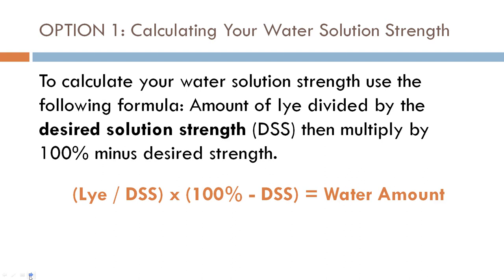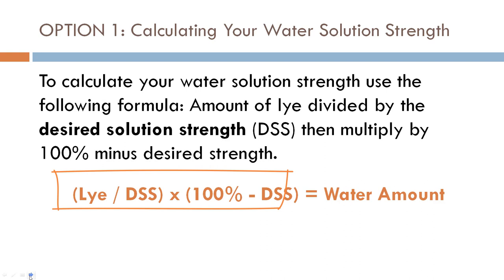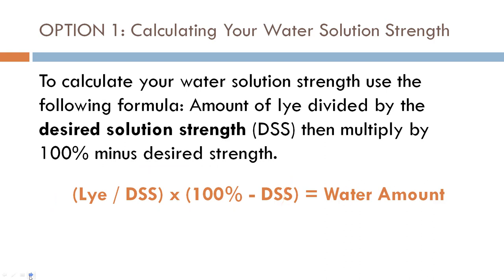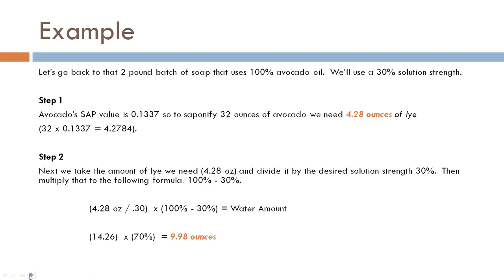There are two ways to calculate your water solution strength. Option one has just one formula — you input everything and get your answer. Option two has two steps. I like option two better; my brain just remembers it more easily. Use whichever makes the most sense to you. To calculate your water using option one, take the amount of lye, divide that by your desired solution strength, then multiply by (100% minus your solution strength) — that gives you your water amount.